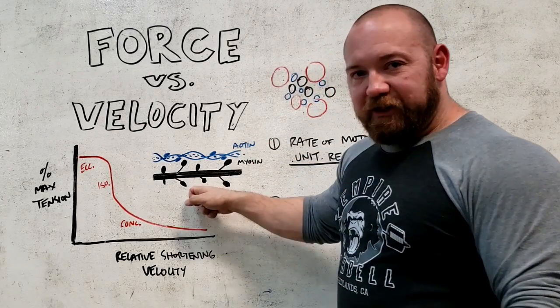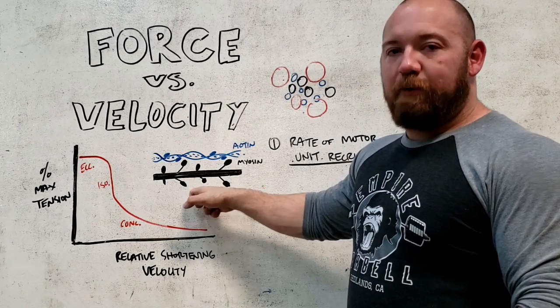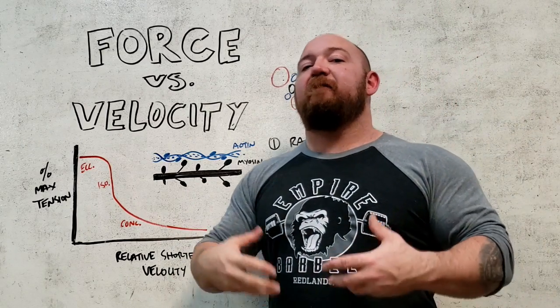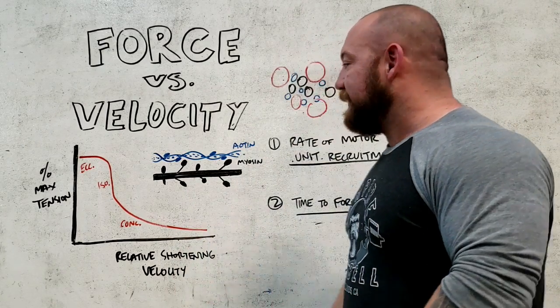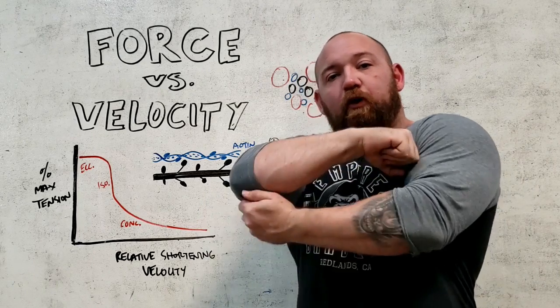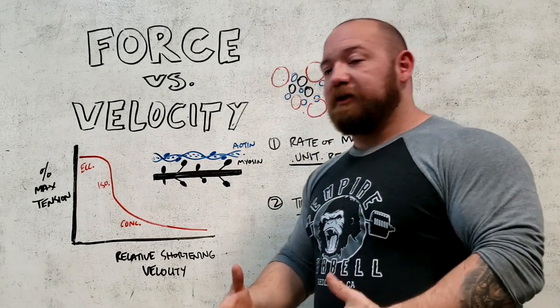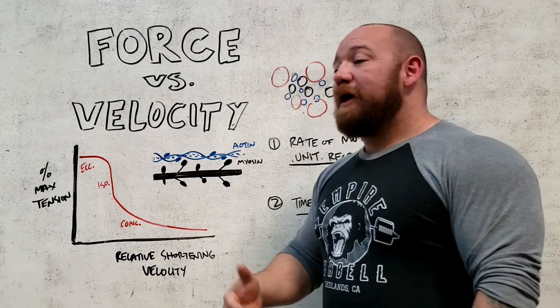Now, the thing is, this is a chemical reaction. It is not trainable. You cannot make a chemical reaction go off faster. It happens at the rate that it happens. The time it takes to form this cross bridge that leads to this pulling where the muscle fiber shortens takes time.